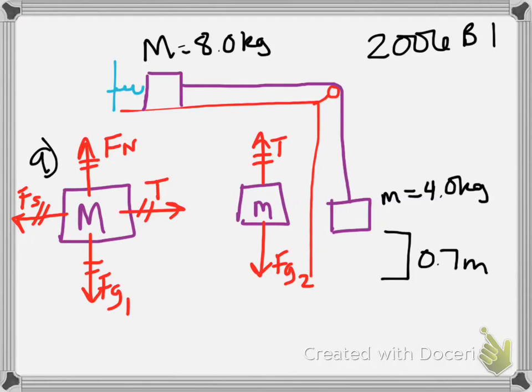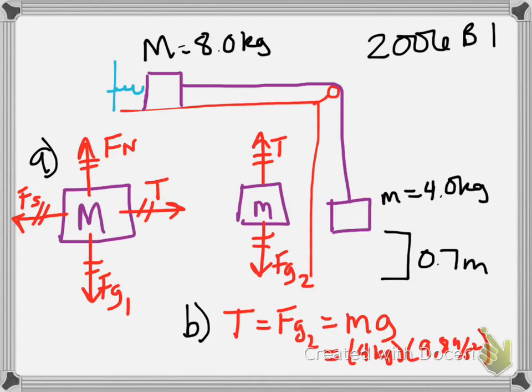So part B says now that we have to calculate the tension in the spring. So that should be relatively easy. If nothing's moving just yet, then we know that the tension on the 4-kilogram block, the lowercase m block, that has to be equal to the gravitational weight of that particular block because nothing is actually moving. So that means for part B, we could just say that the tension has to be equal to Fg2, which in this case would be lowercase m times gravity. And then doing the calculation, that would be 4 kilograms multiplied by 9.8 meters per second squared. Or, if you do the calculations, 39.2 newtons. And there's our tension.